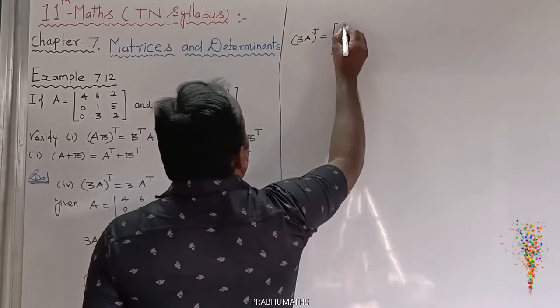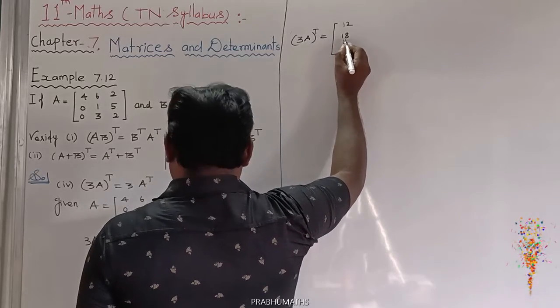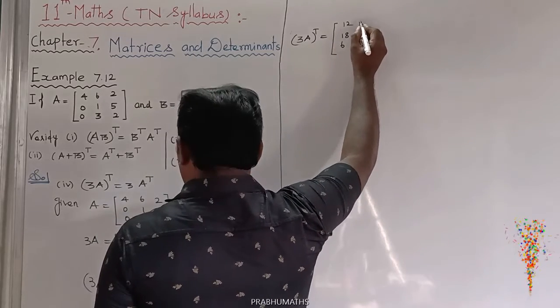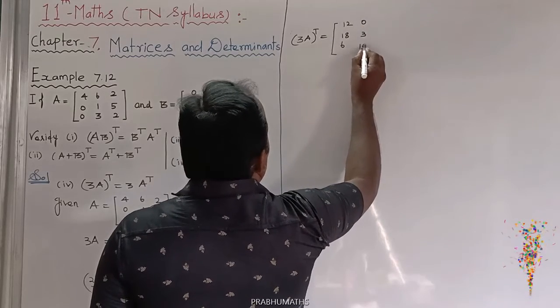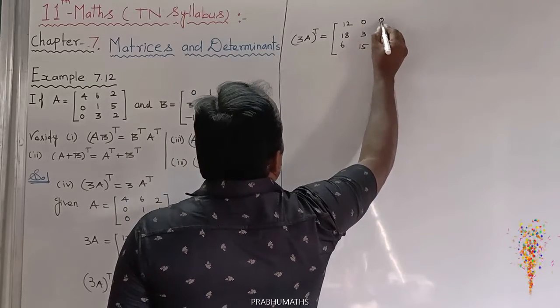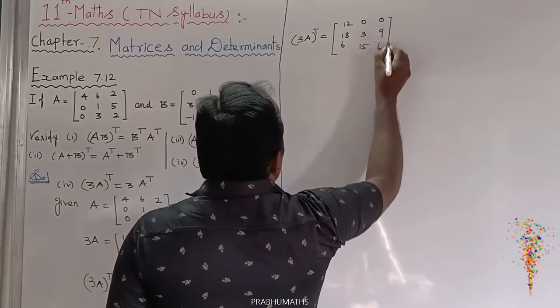We get the answer is 12, 18, 6 the first one. Next is 0, 3, 15. Next is 0, 9, 6. That is the first equation.